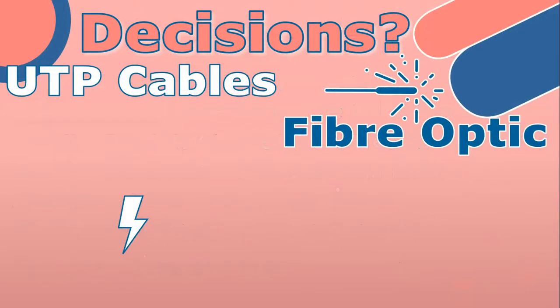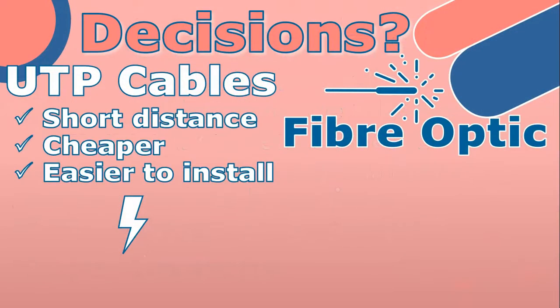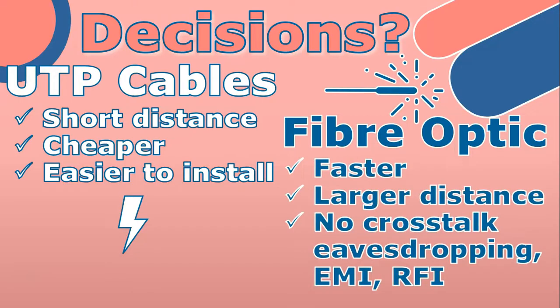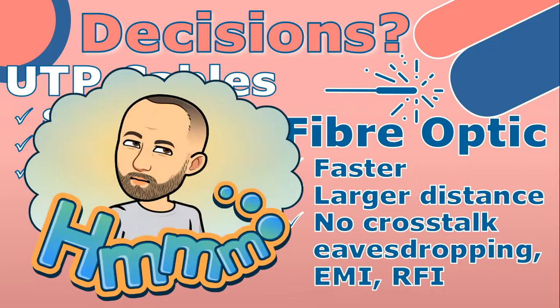In summary, UTP cables are best for short to medium distance connections within a building or campus, especially given they are cheaper and easier to work with. Fiber optic cables are better suited for high-speed data transmission over great distances, with added benefits of not being affected by crosstalk and EMR, making them a popular choice for the backbone of a network. The choice between the two will depend on your specific network needs, and you may end up using both in different parts of your network.